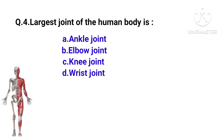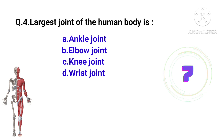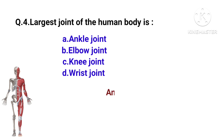The largest joint of the human body is: ankle joint, elbow joint, knee joint, or wrist joint? The largest joint of the human body is the knee joint.